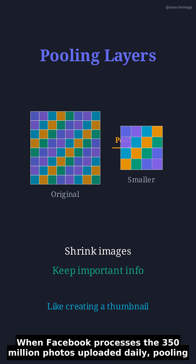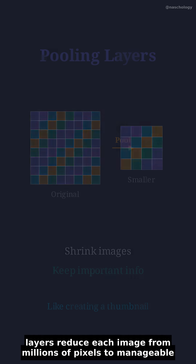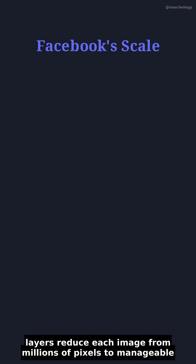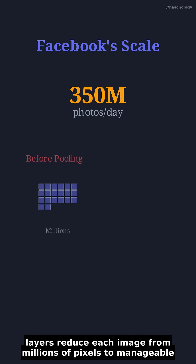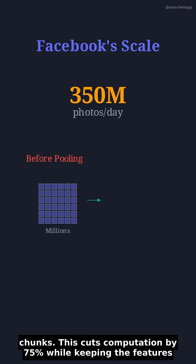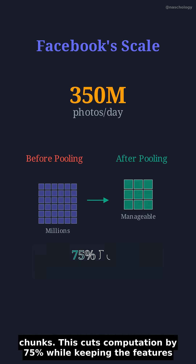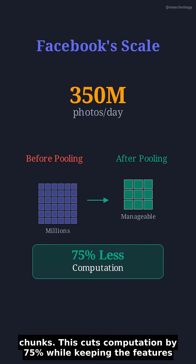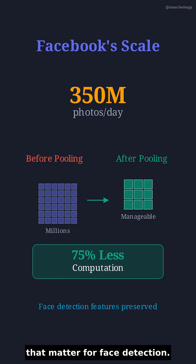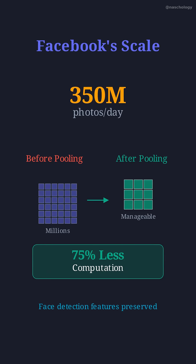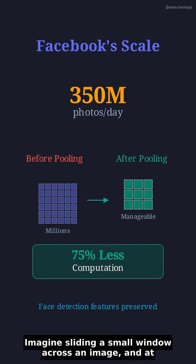When Facebook processes the 350 million photos uploaded daily, pooling layers reduce each image from millions of pixels to manageable chunks. This cuts computation by 75% while keeping the features that matter for face detection.